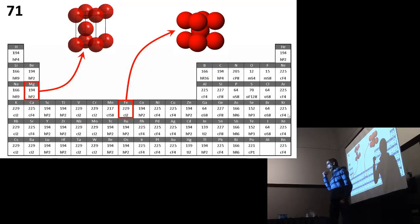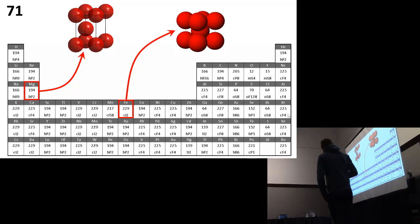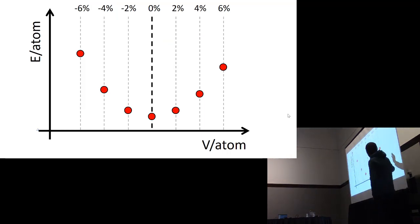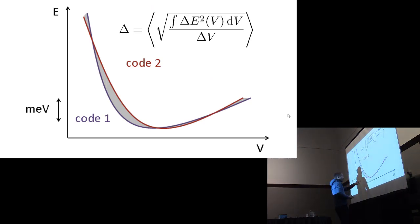So how was that number determined? We start again from more or less the same set of 71 elemental crystals. For each crystal, we agree on a set of seven volumes. For each of these volumes, both DFT codes calculate the energy. With the two DFT codes, you fit an equation of state through that. Then you compare these two equations of state and measure the area in between, which is a number called delta expressed in energy units. If these two DFT codes would predict exactly the same energy versus volume curve, that area would be zero, delta would be zero. If delta is non-zero, it measures the amount of disagreement between these two DFT codes.